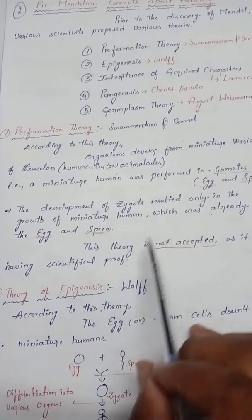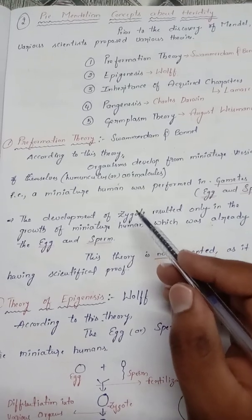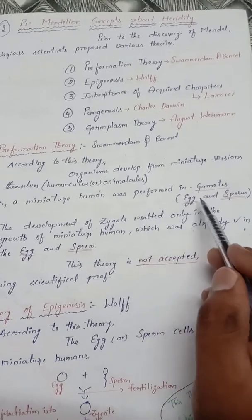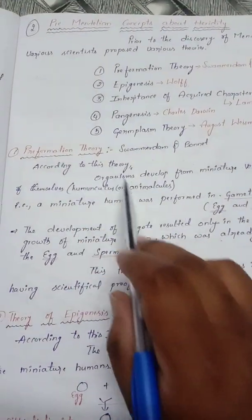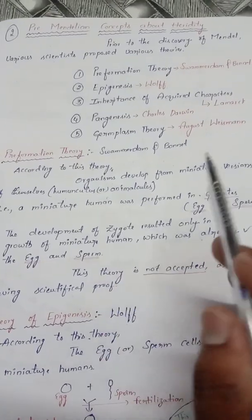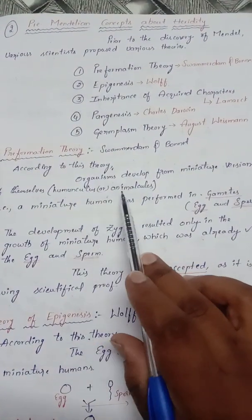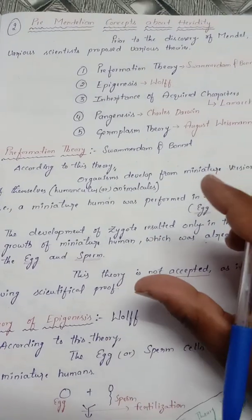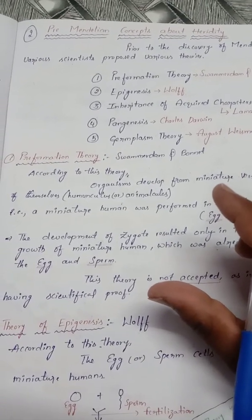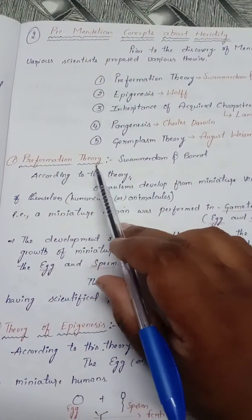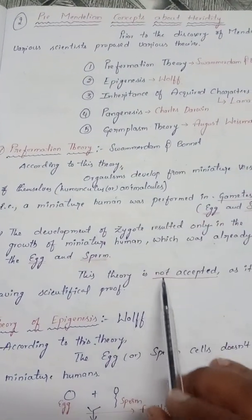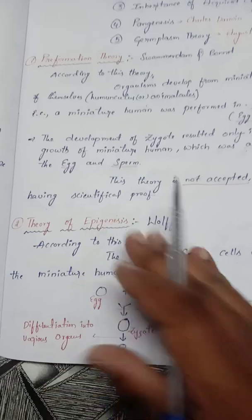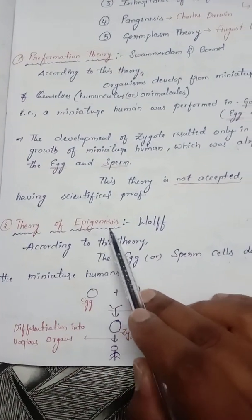This theory has no scientific proof. Generally, a zygote forms by fertilization of egg and sperm, but this theory claims a miniature human being is already present in the gametes and simply grows into a full human. That is not actually what happens. The preformation theory given by Swammerdam and Bennett is totally rejected and not accepted anymore.